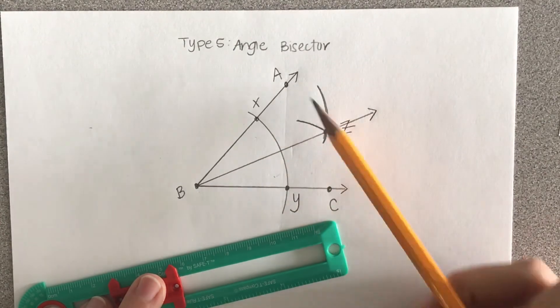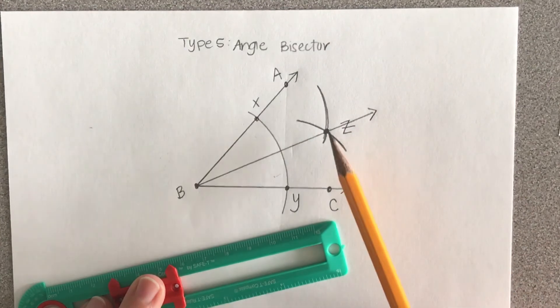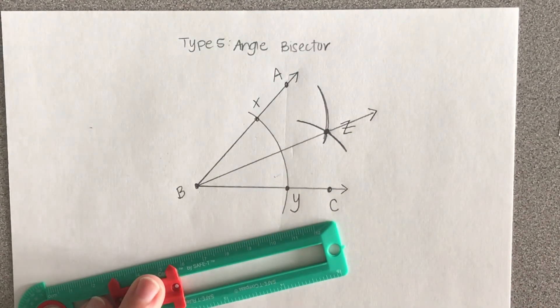It cuts these two angles in half. So this angle here, angle ABZ, is exactly the same as angle ZBC. They are congruent to one another.